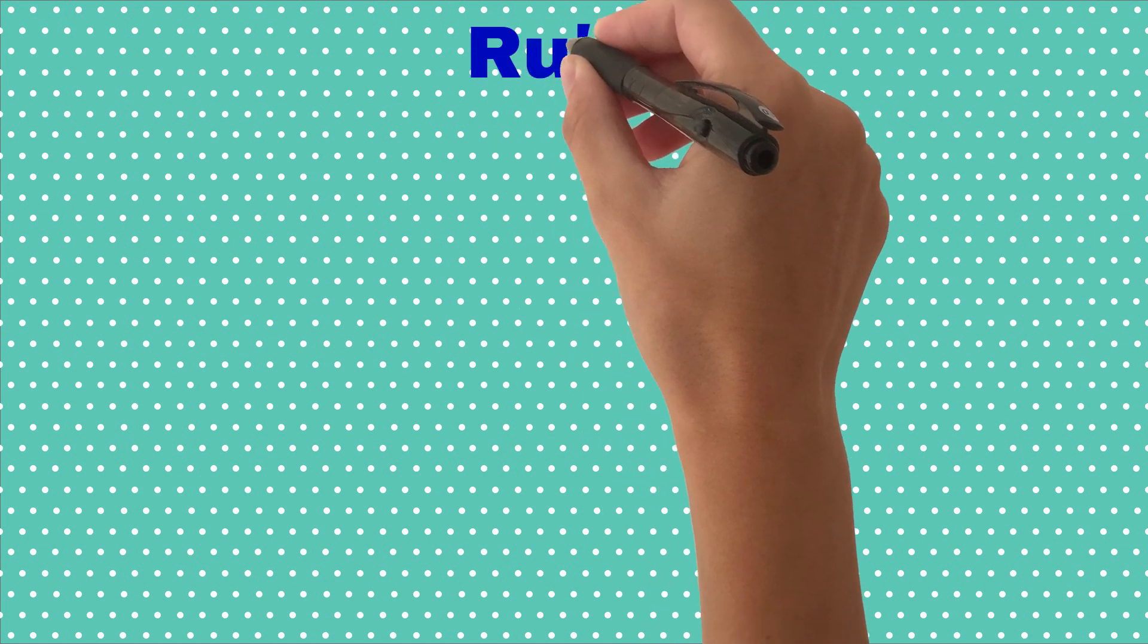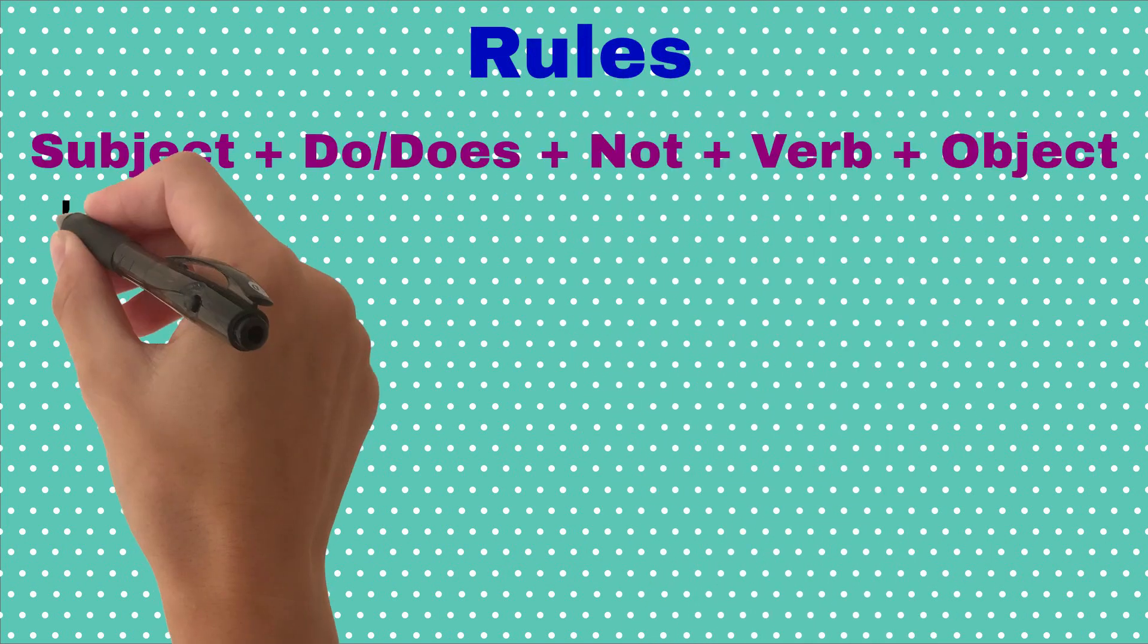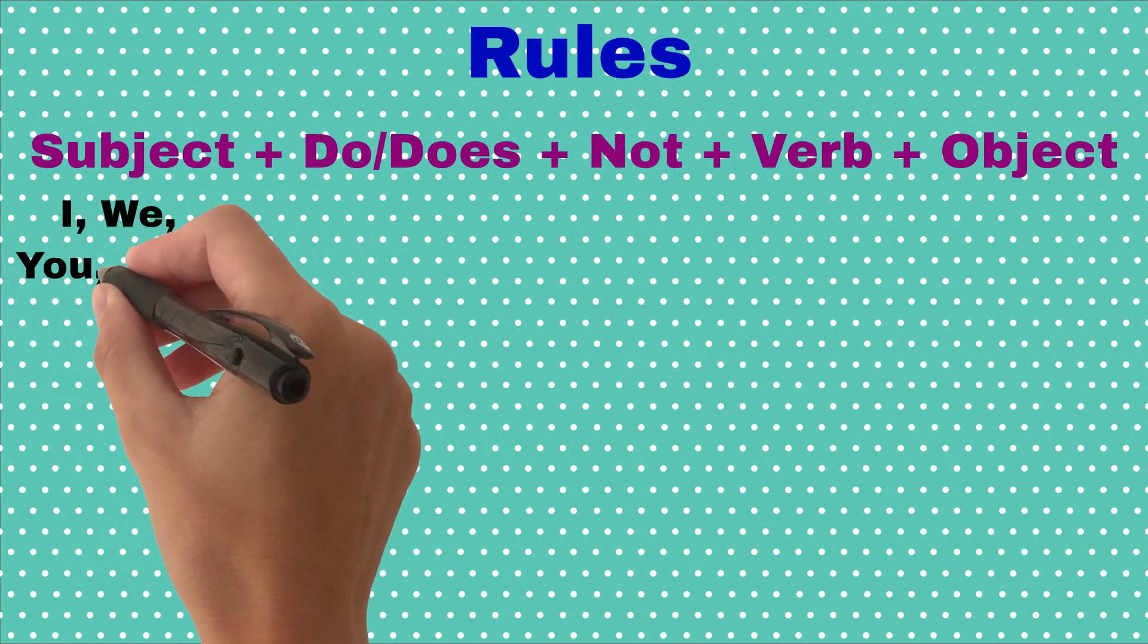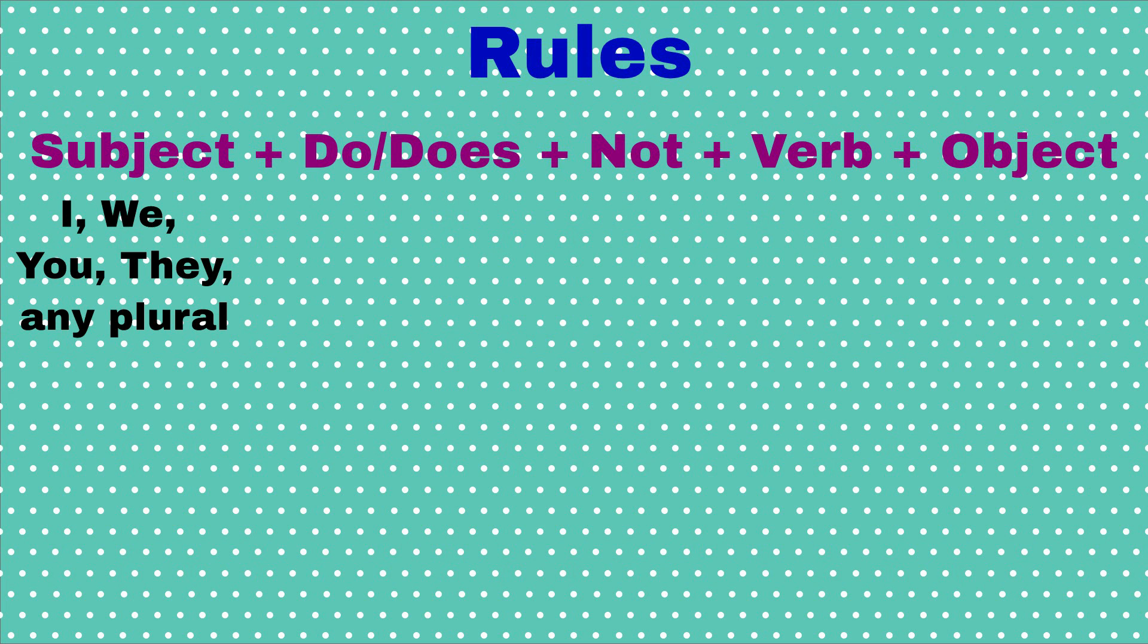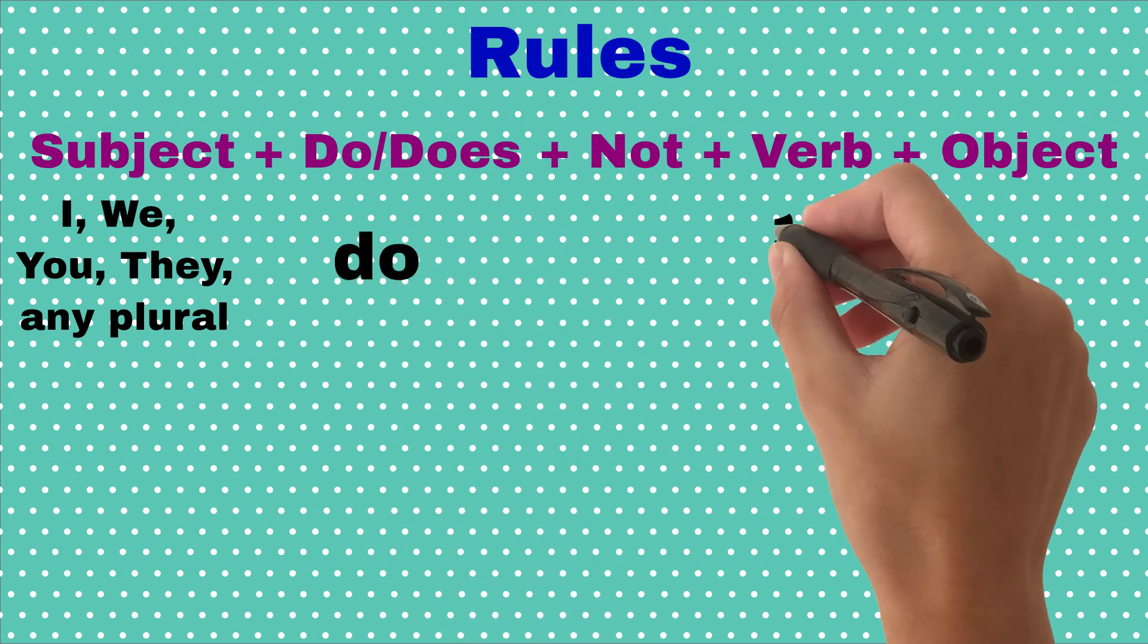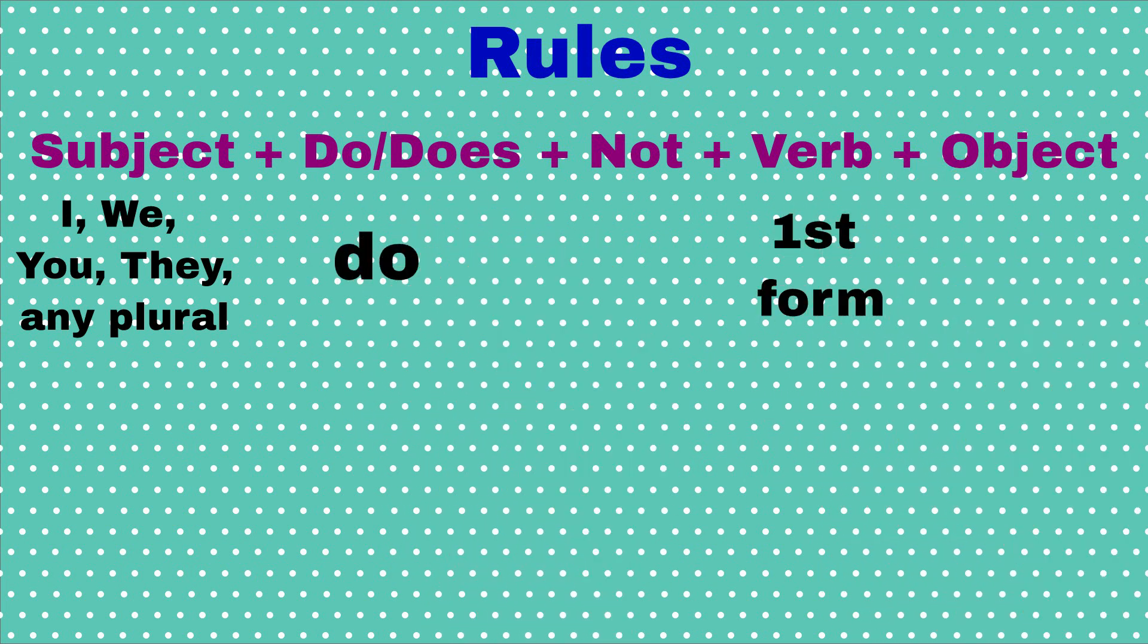Let's discuss some rules of negative sentences formation. If the subject is I, we, you, they, or any plural, we will always use do, and verb's first form will remain same as in the affirmative sentence.